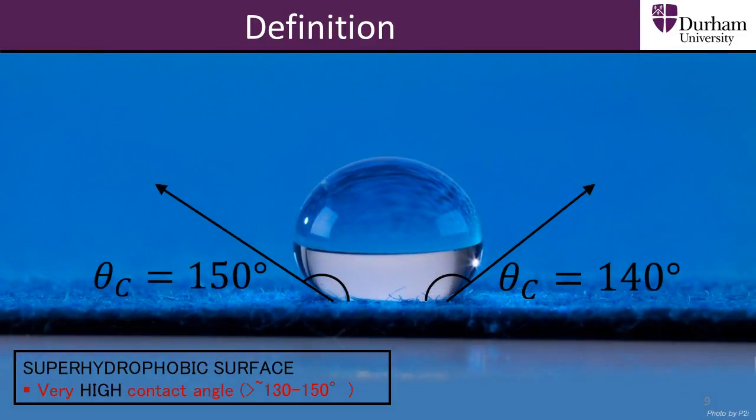In general, there are two ways to make a surface more hydrophobic and eventually superhydrophobic. The first way is to attach hydrophobic groups to the surface. The second method is to increase the roughness of the surface.